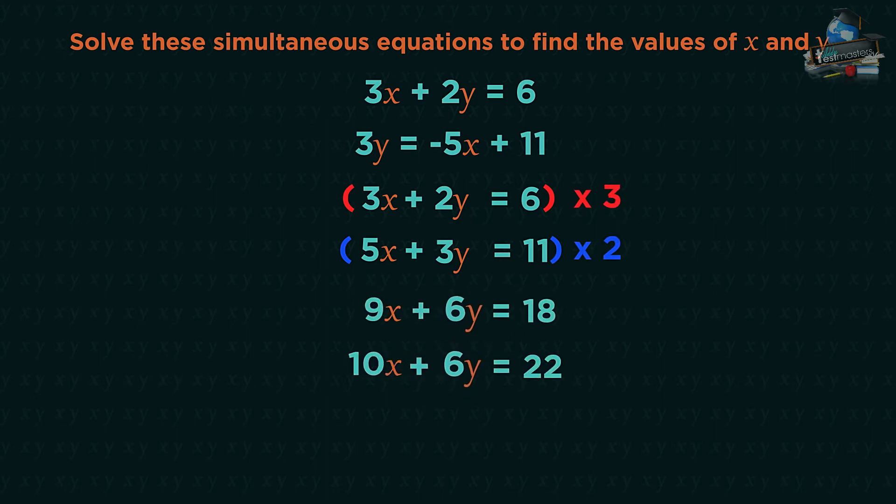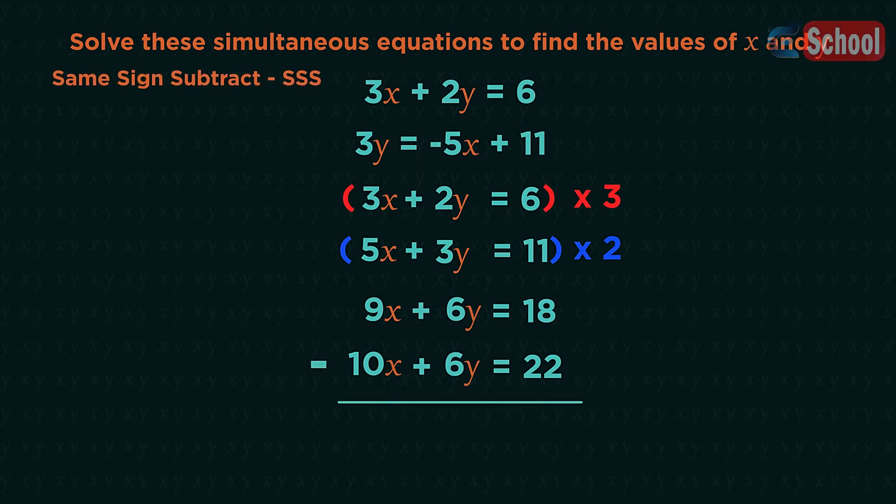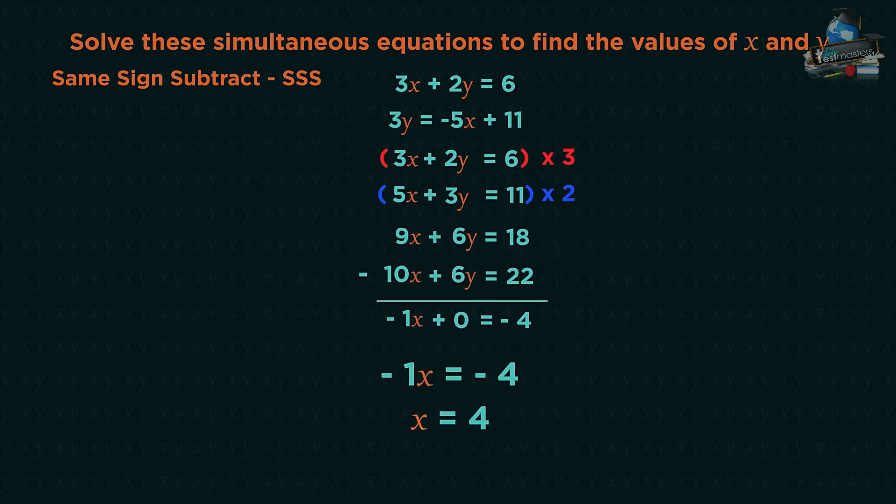So back to having 6y in both. Now to eliminate, remember same sign subtract. Both are plus 6y, so we subtract the equations. 9x minus 10x is minus 1x. Plus 6y minus 6y is 0. 18 minus 22 is minus 4. Solve for x means x is 4.